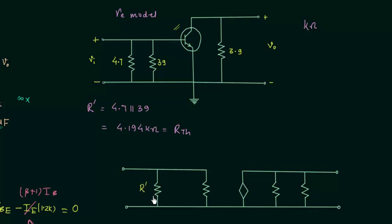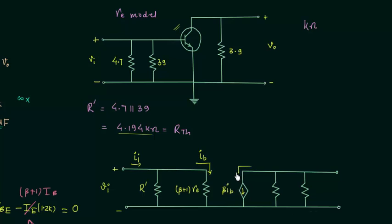In the next step, we replace the transistor by its Re model equivalent. In this equivalent circuit, resistance R' equals 4.194kΩ is at the input. The resistance β+1 times Re is in series with the base, carrying current IB. This is the input voltage and input current. There is a current-dependent source equal to β·IB carrying collector current IC. The output resistance RO equals 50kΩ as given, and resistance RC equals 3.9kΩ is at the output. The output voltage and output current are labeled at the output terminals.